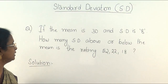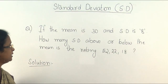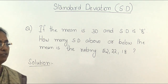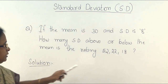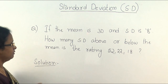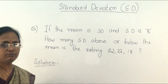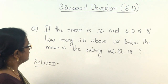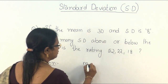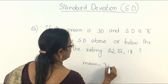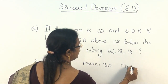If the mean is 30 and standard deviation is given as 8, how many standard deviations above or below the mean are the ratings 52, 22, and 18? These are 3 different data points for which we need to find the standardized value. The mean is given as 30 and the standard deviation is given as 8.